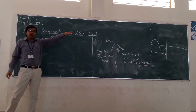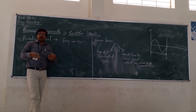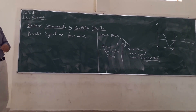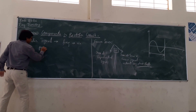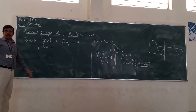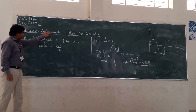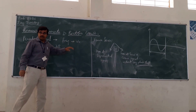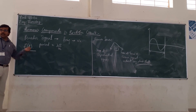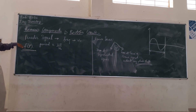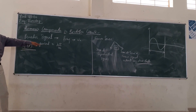If you are having a periodic signal, it will have some frequency component. Let us assume that frequency component is omega. And let us assume that you are having some period. The period is determined by the frequency. Let us assume the signal F(t), which is periodic in nature. It is having the frequency component omega and it is having the period, which is 2π divided by omega.